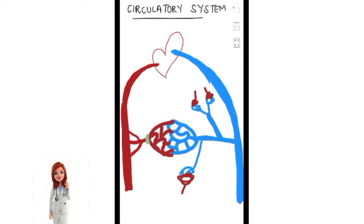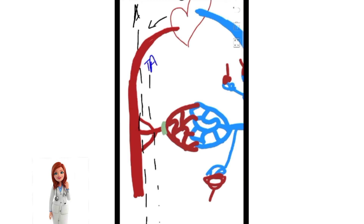Moving on to the components of the circulatory system — there are basically five to six components. Number one is the heart. Blood flows from the heart into the arteries. From the arteries, blood goes into the arterioles, which are the terminal arterioles that may enlarge and converge to form the meta-arterioles.